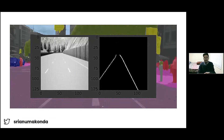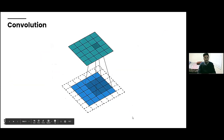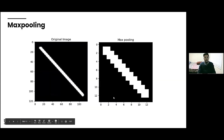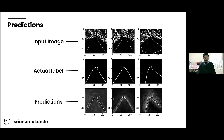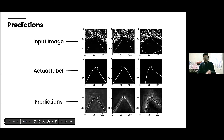As the model learns, it realizes the background and trees don't matter — just the lane lines. After training, these are the example predictions I'm getting. After passing in an input image, this is the actual correct label, and this is what the model predicts. For this image, this is what it predicts lane lines are, which isn't too bad. I'm currently working on implementing it in my car.